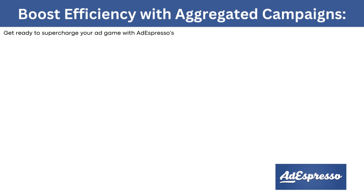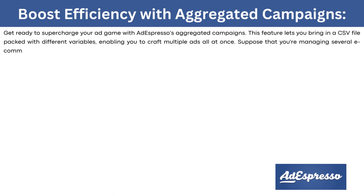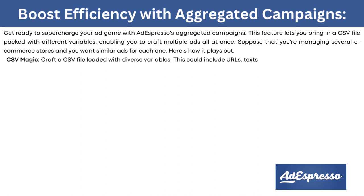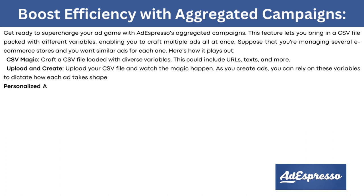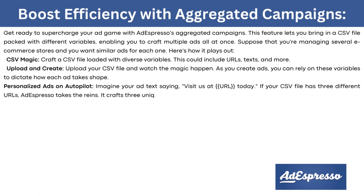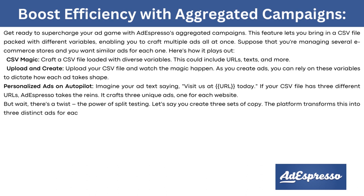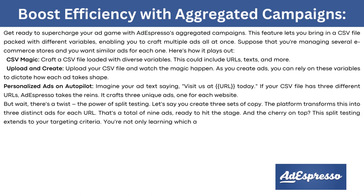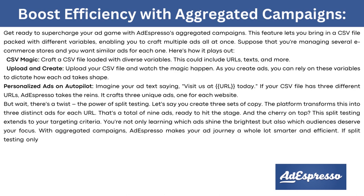AdEspresso's aggregated campaigns let you bring in a CSV file packed with different variables, enabling you to craft multiple ads all at once. For example, if your CSV file has three different URLs and you create three sets of copy, the platform transforms this into nine distinct ads. The split testing also extends to your targeting criteria — you're learning not only which ads perform best, but also which audiences deserve your focus.